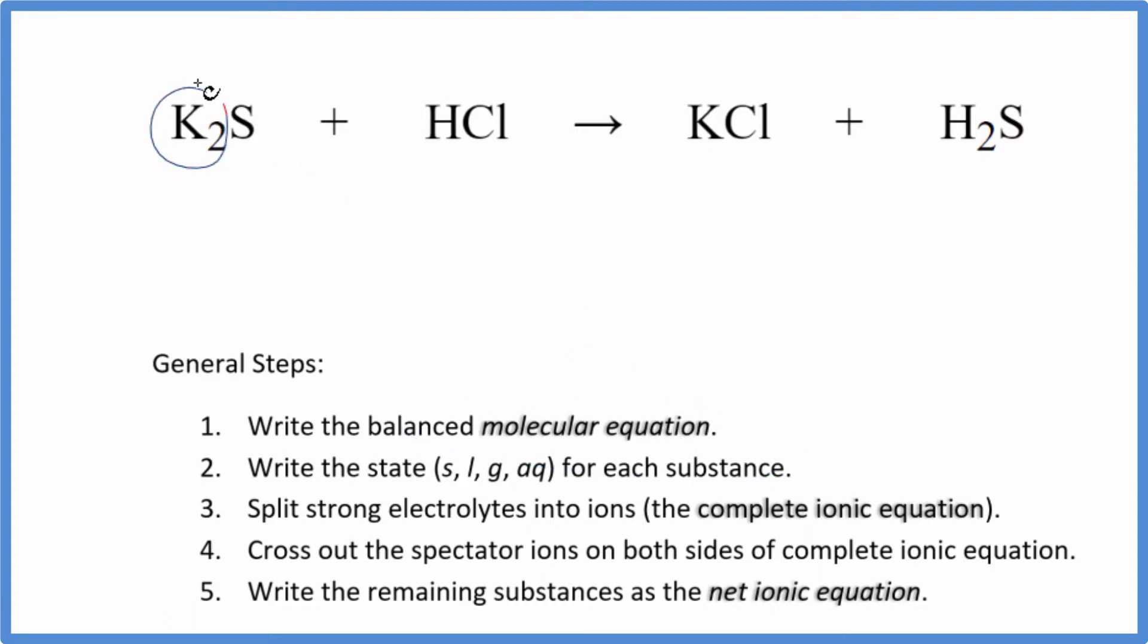I can see there's two potassium atoms here and just one here. So let's put a 2 in front of the KCl. Now we've balanced the potassium atoms but we have two chlorines. We put a 2 here, two chlorines, two hydrogens. We have two hydrogens here so that's good. We have a sulfur and a sulfur. We're done. That's the molecular equation.